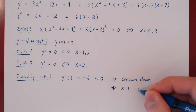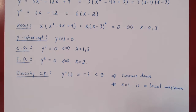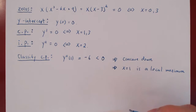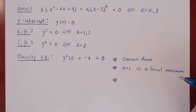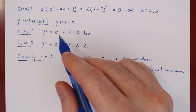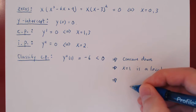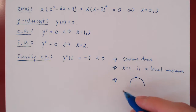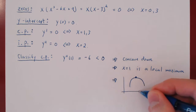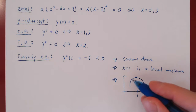So x equals 1 is a local maximum. If you visualize what the function looks like around x equals 1 — the derivative is 0 so the curve is flat, and it's concave down — the graph looks like an upside-down U shape around x equals 1.